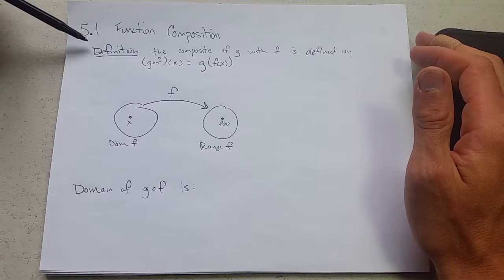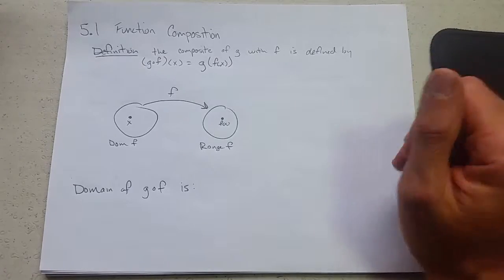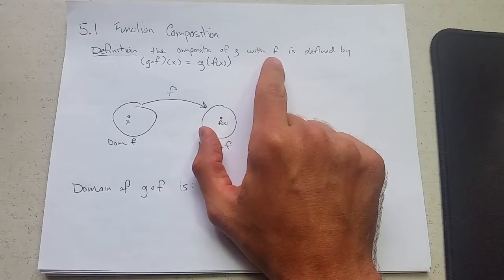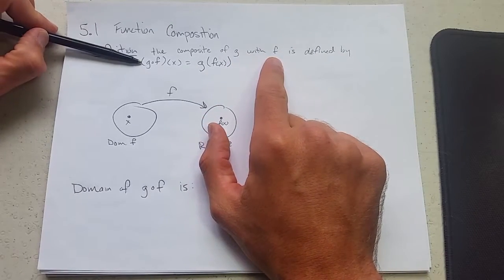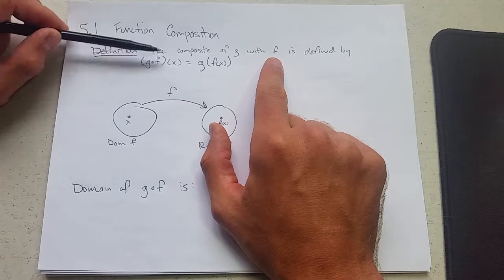5.1 function composition. The definition: the composite of two functions g with f. The way we write it is g, this is a small circle, so this is read g of f of x.